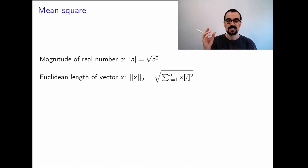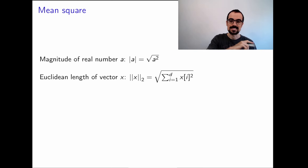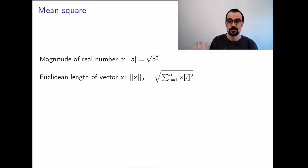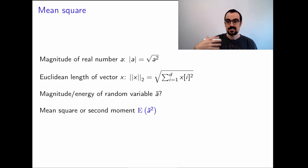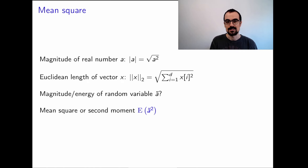When we're thinking about quantifying the magnitude of a random variable — and a random variable is a function from a sample space to either a discrete set or to the reals — a reasonable way of quantifying the magnitude or the energy in the random variable is to consider its square and then take the expected value, the typical value of its square. That gives us some idea of how much energy there is in the random variable. That's the intuition behind the mean square.